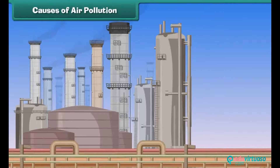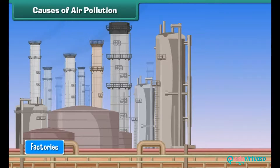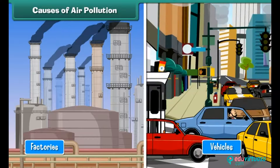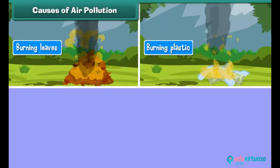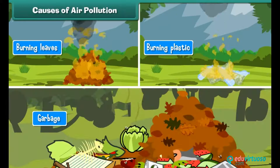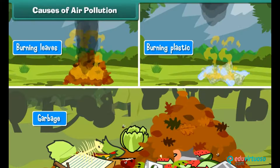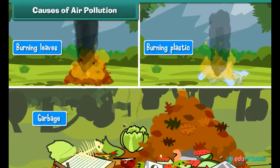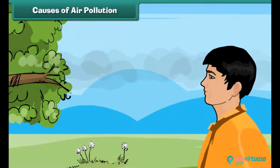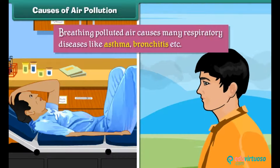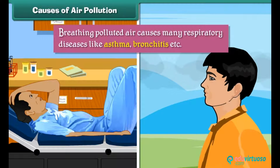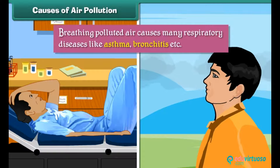Air gets polluted by the smoke released by factories and vehicles. Burning leaves, plastic, and garbage also produces smoke and pollutes the air. Breathing polluted air causes many respiratory diseases like asthma and bronchitis.